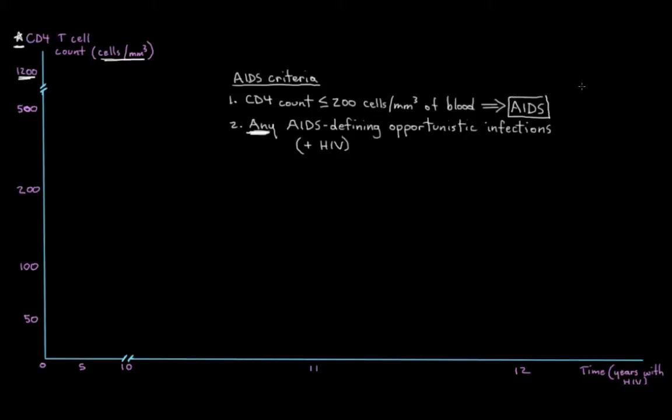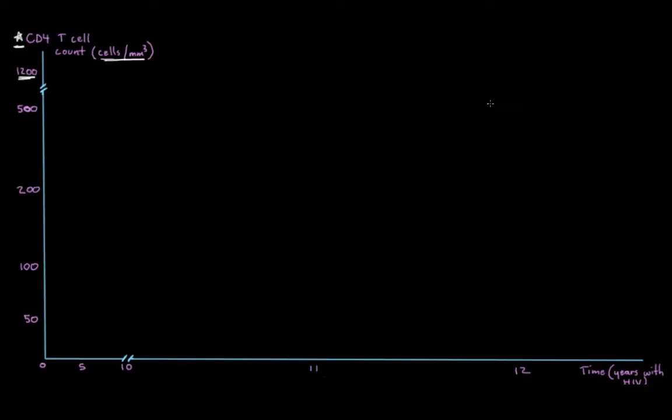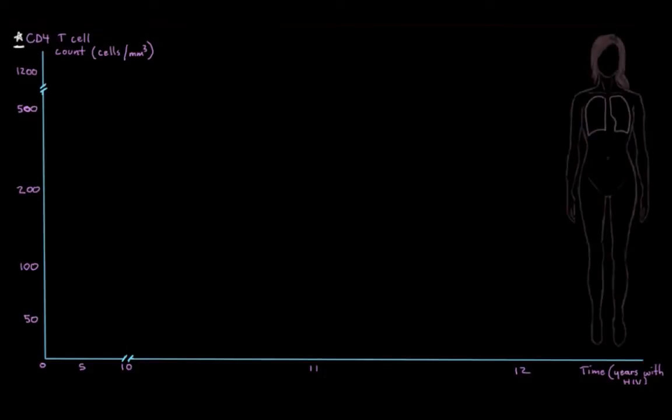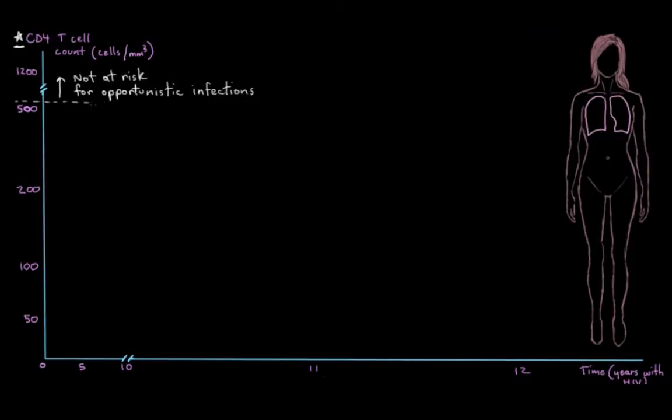So let's do some drawing here to look at what types of AIDS-defining illnesses can come on and when they might come on, because it's important to be on the lookout for signs and symptoms of these conditions, because they can be really dangerous to your health. So generally speaking, people with CD4 counts greater than 500 cells per cubic millimeter of blood are not at risk for opportunistic infections. But if you're hovering right around 500-ish, then the daily ebb and flow in your CD4 counts means that you might develop some minor infections, like thrush in your mouth or yeast infections in the vagina.